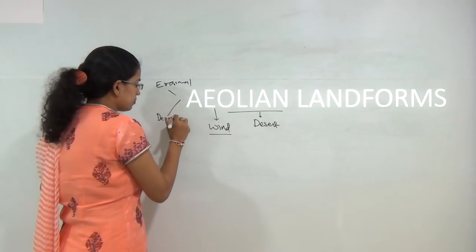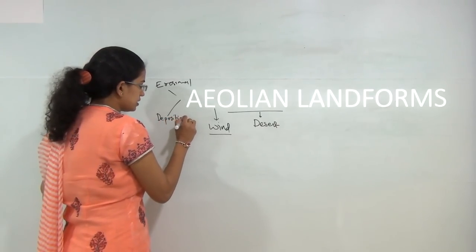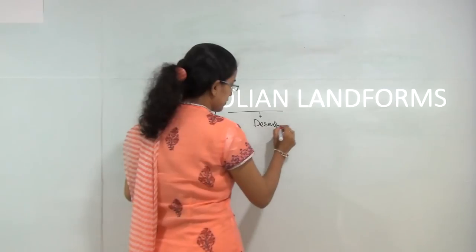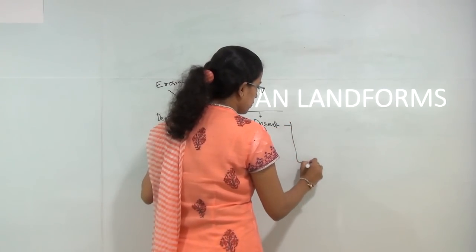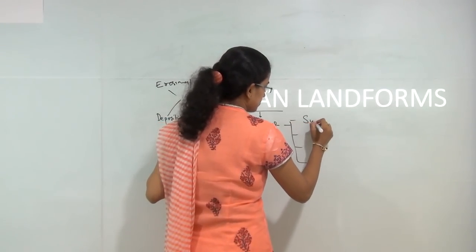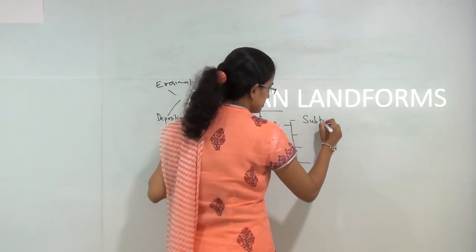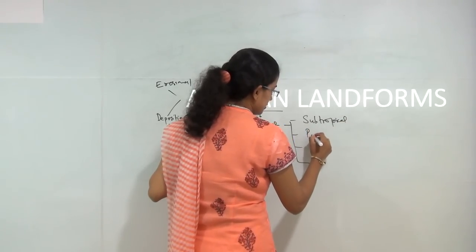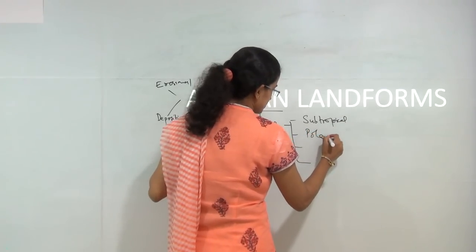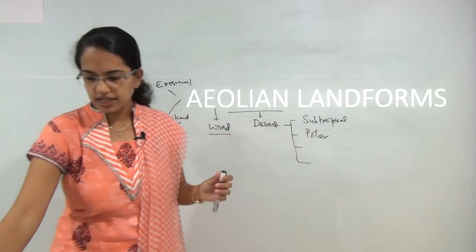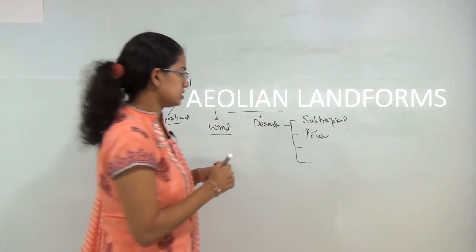We will start with the types of deserts. We can classify deserts into four types: they can be subtropical, polar, continental, and coastal.